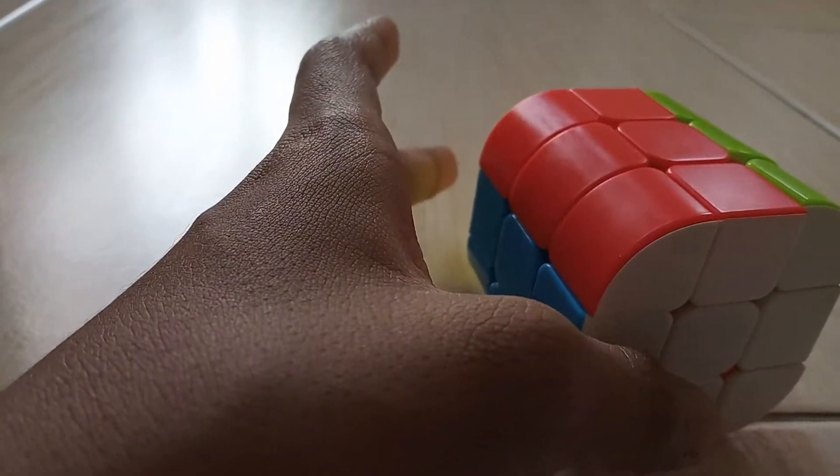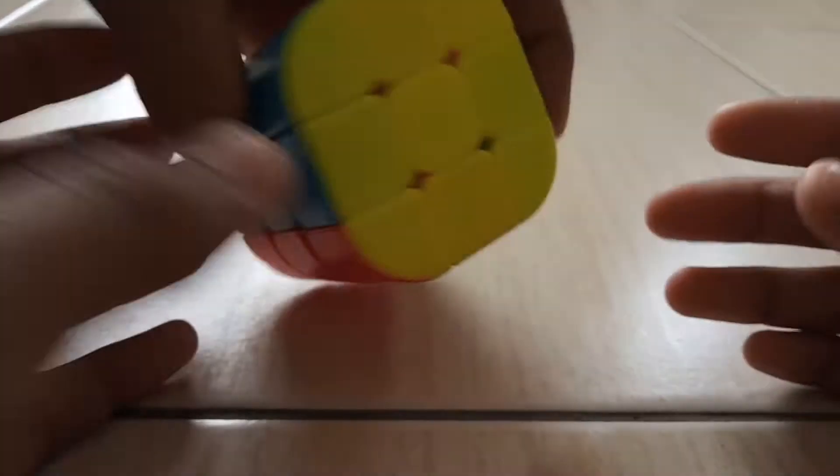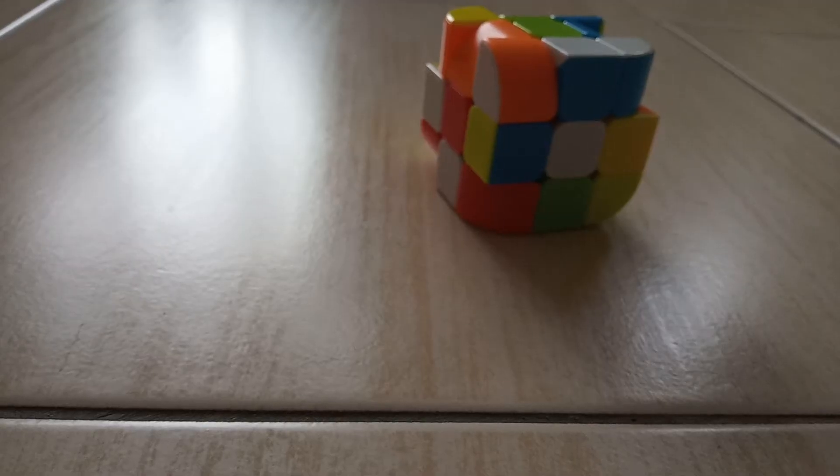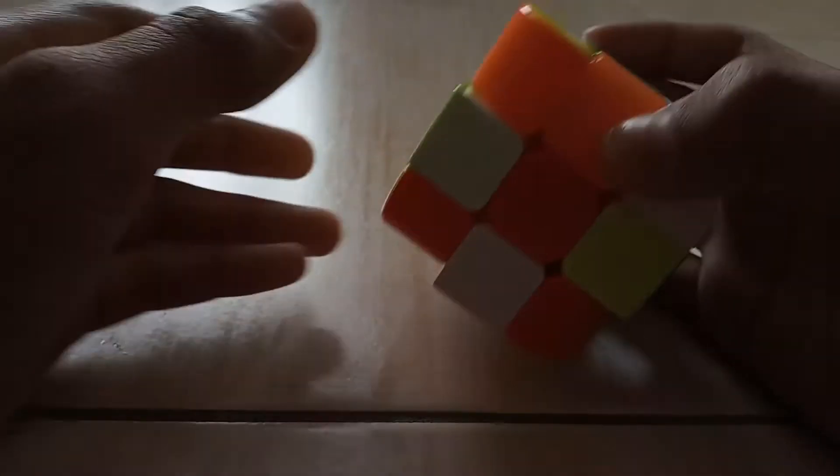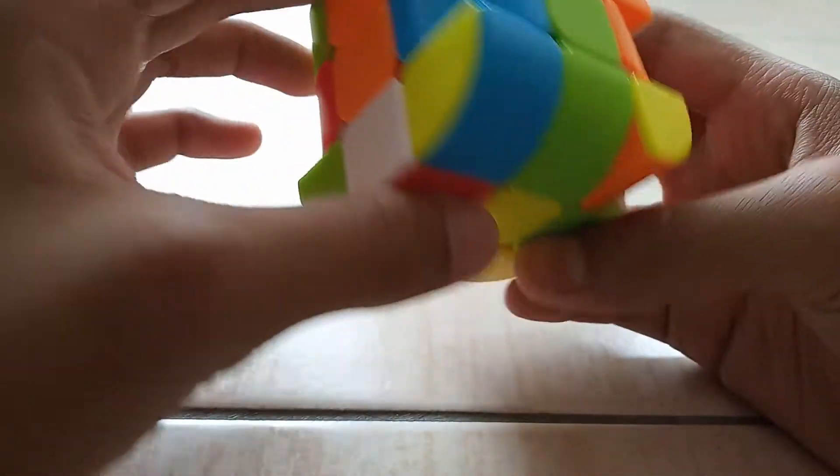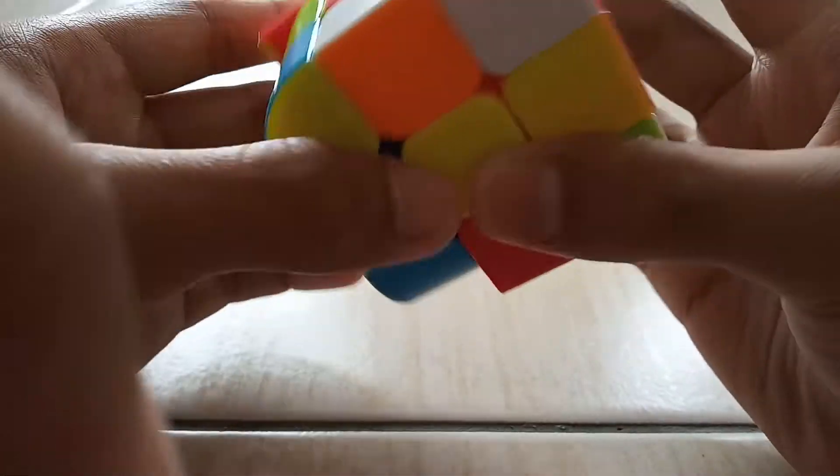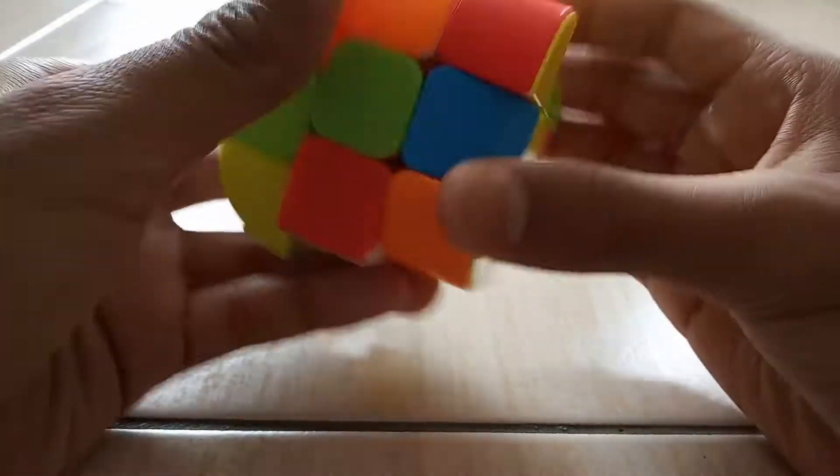Let's try and get a solve on this cube. Okay, so let's get a solve on this cube. Okay, now the cube is scrambled. So let's try and solve it. I don't think I can solve it that fast because it pops quite easily.